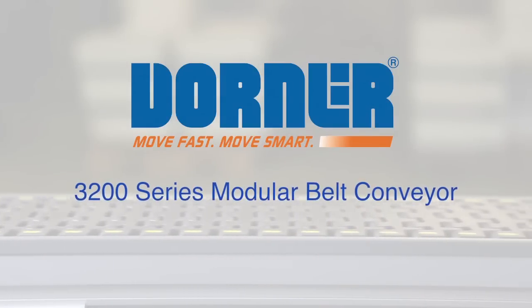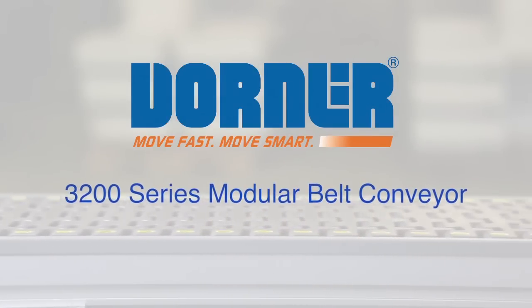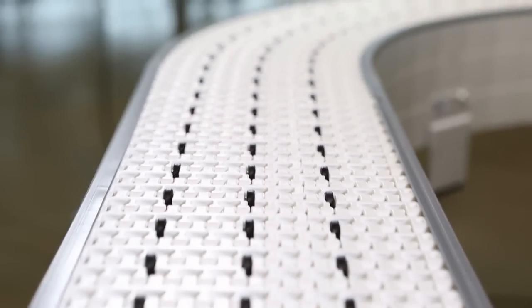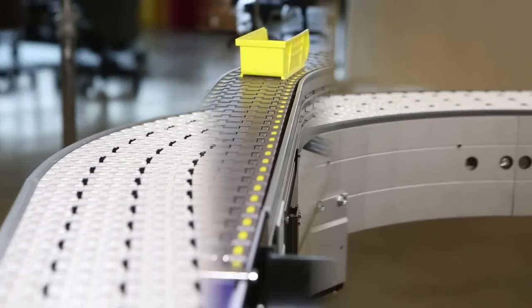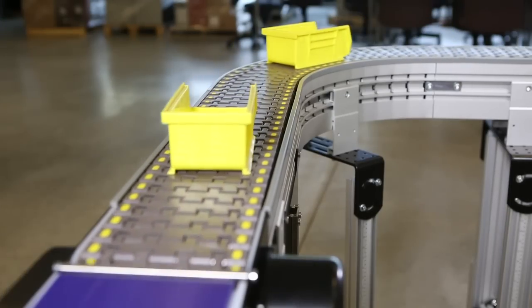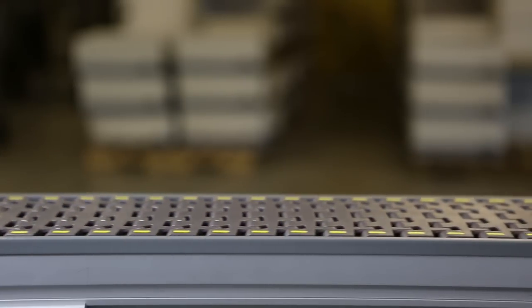Dorner Manufacturing presents the 3200 Series Modular Belt Conveyor. The 3200 line is ideal for part handling, accumulation, positioning, high speeds, long runs, and product transfers.